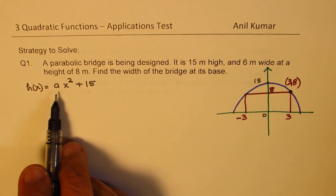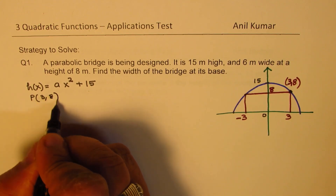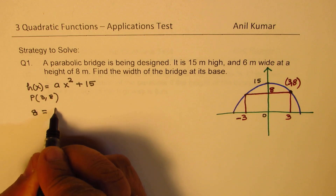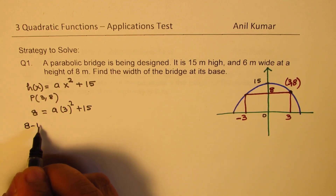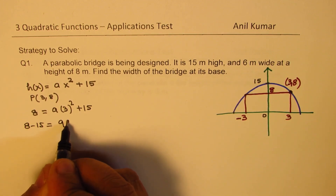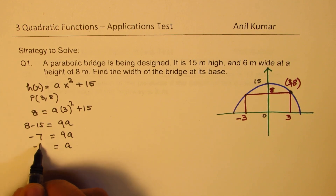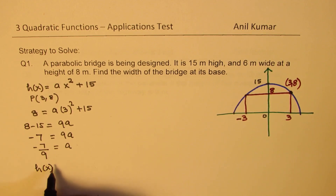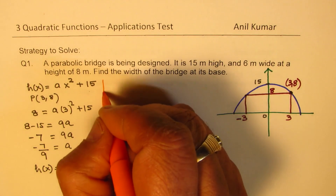'a' will be negative. Using point (3, 8): h(3) = 8, so 8 = a·(3²) + 15, giving 8 − 15 = 9a, so −7 = 9a, and a = −7/9. Therefore, the height of the parabolic bridge is h(x) = −(7/9)·x² + 15.